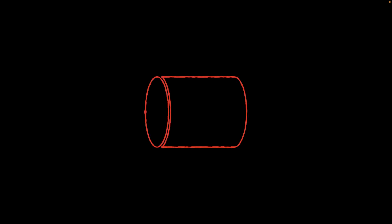I'd like to begin by describing the importance of pressure in blood flow. Let's bring in a blood vessel with two sides — side one and side two — each with a specific pressure. If the pressure in side one is greater than side two, the blood will flow from side one to side two, because fluid always flows from higher hydrostatic pressure to lower hydrostatic pressure.